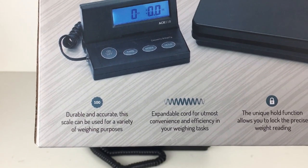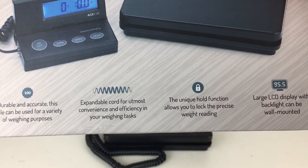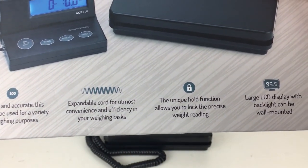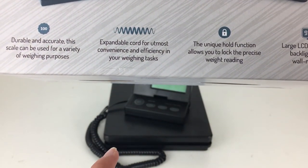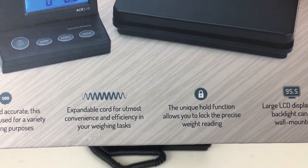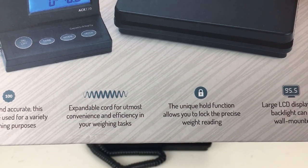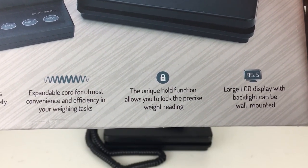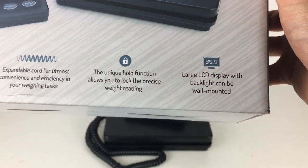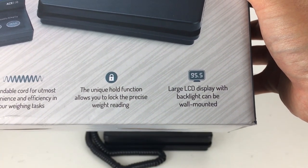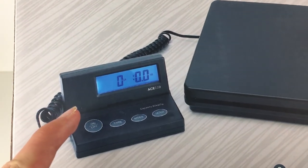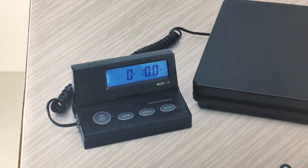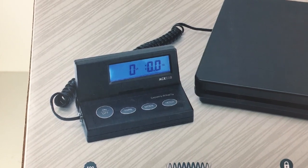Durable and accurate, this scale can be used for a variety of weighing purposes. Expandable cord - in fact the cord is really good. You can see the cord there and I will tell you a feature of the cord in a bit that obviously makes it easier for weighing packages. The unique hold function allows you to lock the precise weight reading, that's an interesting feature as well. And we've also got a large LCD display as you can see there, which is very good because obviously you don't want a really small display or else you're not going to be able to read the weight properly.